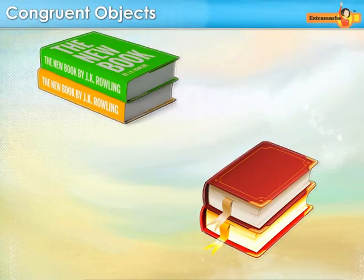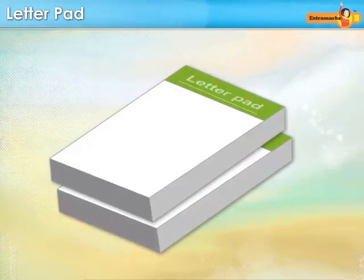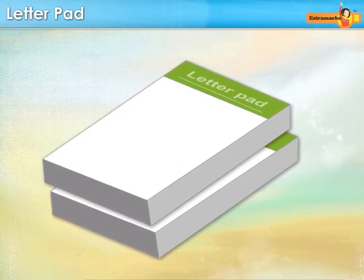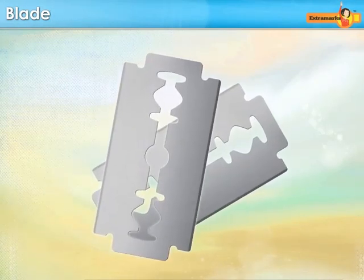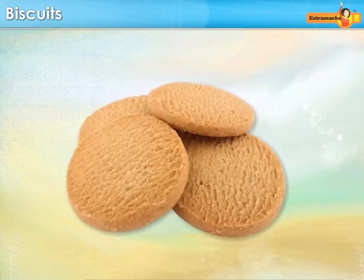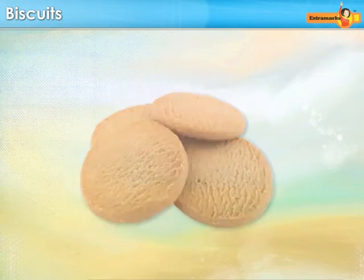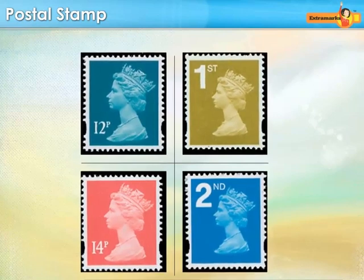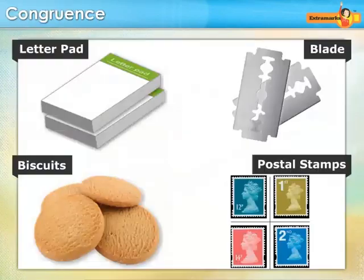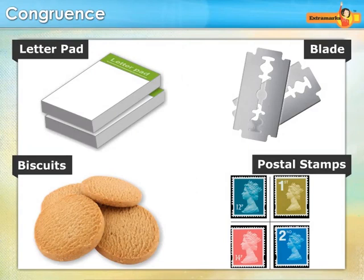Congruent objects are exact copies of each other in respect to their shape and size. Objects such as letter pad, blade, biscuits and postal stamps are some of the examples of congruent objects.